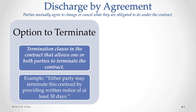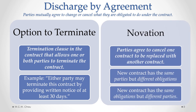The parties may have agreed to put a termination clause in their contract that allows one or both parties to terminate the contract. The way the termination clause is written may include some conditions that need to be satisfied in order to allow a party to terminate. A simple example is stated here where the clause says: either party may terminate the contract by providing written notice of at least 30 days.